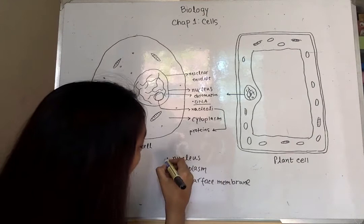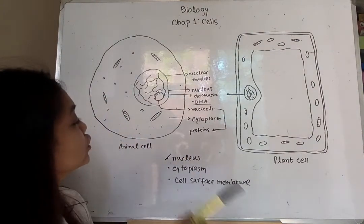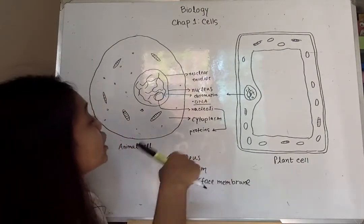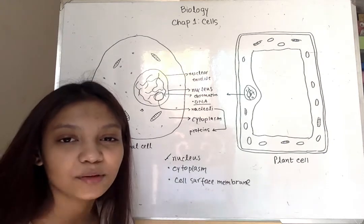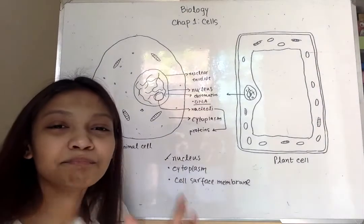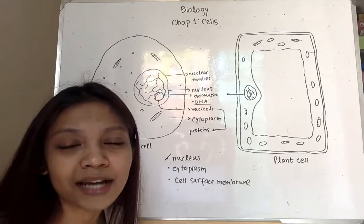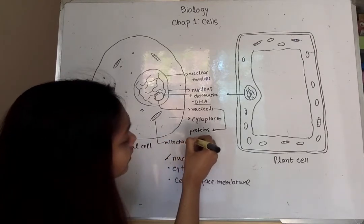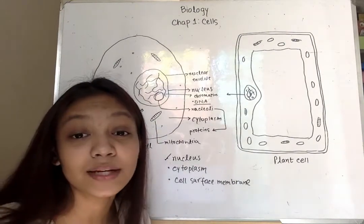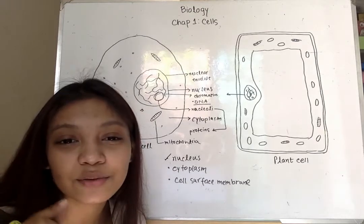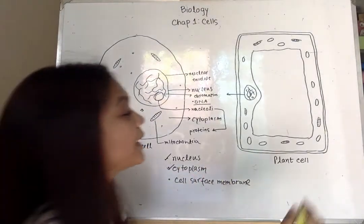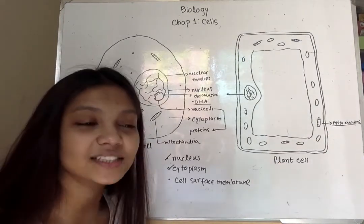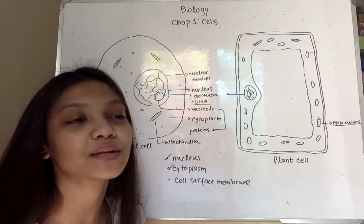Since we have talked about the nucleus, let's now talk about cytoplasm. The cytoplasm forms the larger part of the cell and is the place where most life processes occur. In this cytoplasm we can find many organelles, and one of these organelles is called the mitochondria. A mitochondria is called the powerhouse of the cell. These are involved in the release of energy from food substances during cell respiration. The plant cell also contains mitochondria for the same purpose.